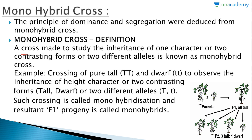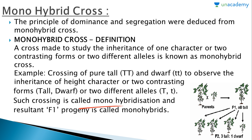A monohybrid cross is defined as a cross made to study the inheritance of one character, or two contrasting forms, or two different alleles. An example is crossing a pure tall plant (TT) with a pure dwarf plant (tt) to observe the inheritance of height — that is, the two contrasting forms tall and dwarf. Such a crossing is called monohybridization, and the resultant F1 offspring is called the monohybrid.